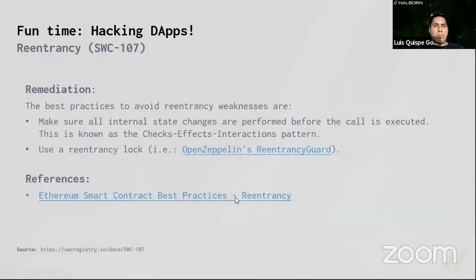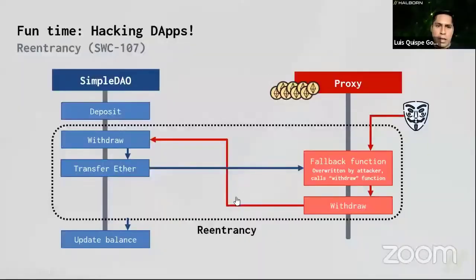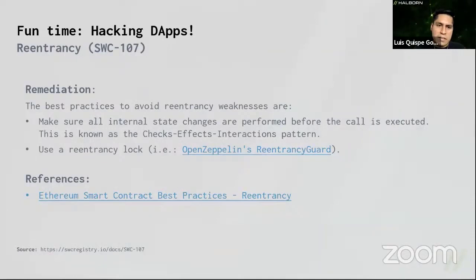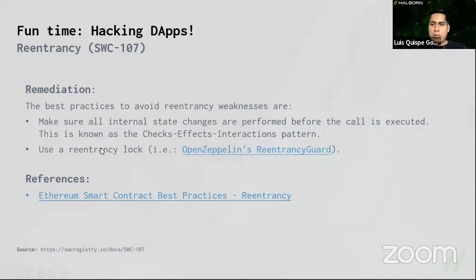What is the remediation? The best practice to avoid reentrancy is to follow a pattern called checks-effects-interactions. In the vulnerable example, when you withdraw, you first transfer Ethers to the caller and then update the balance. The checks-effects-interactions pattern says: before sending money, first update the balance, then send the money — reverse the order of operations. You can also use a reentrancy lock — think of it like a mutex. You activate the mutex so that if someone has entered this function, nobody else can enter at the same time.